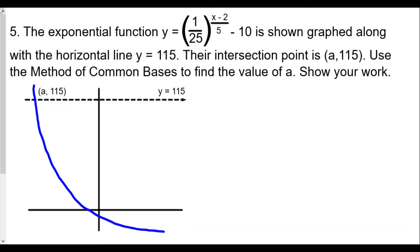For number 5, we have the exponential function y equals (1/25) raised to the (x minus 2)/5 minus 10. This is sketched here graphed along with a horizontal line of y equals 115. The intersection point is going to be (a, 115). Use the method of common basis to find the value of a and show your work.